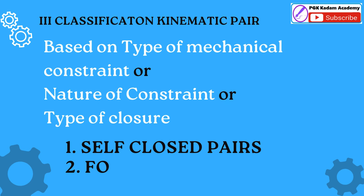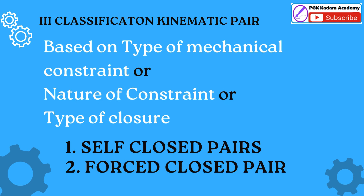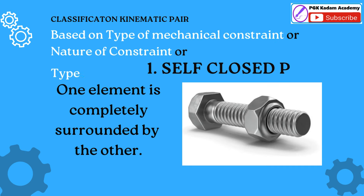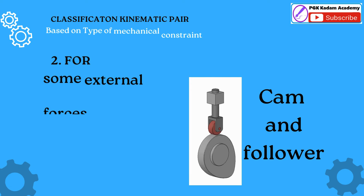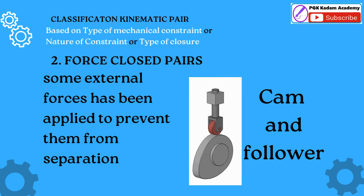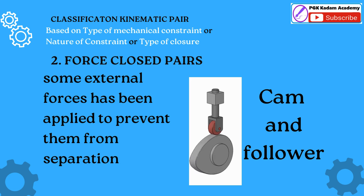Third Kinematic Pair classification: based on type of mechanical constraint, or nature of constraint, or type of closure. Self-closed pairs: one element is completely surrounded by the other. Example: nut and screw pair. Force-closed pair: when the two elements of a pair are not connected mechanically but are kept in contact by the action of external forces, the pair is a force-closed pair. Example: cam and follower pair.